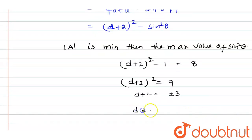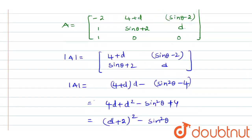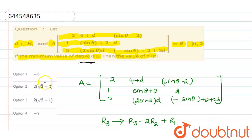So D equals minus 5, and D equals 3 minus 2, that is D equals 1. Looking at the options, option 1 is the right answer, so the value of D that satisfies the condition is 5.